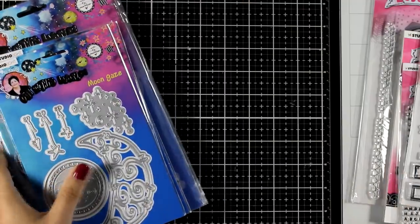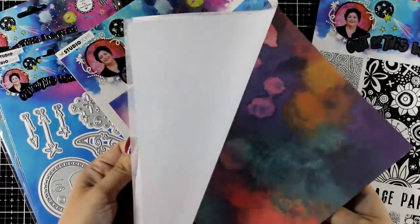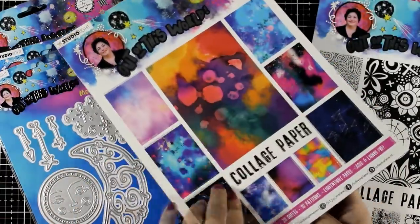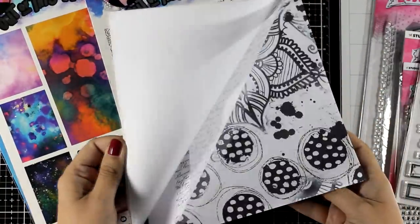So anyway, in this collection you will also find pattern paper, you will find collage paper and there is also a block of die cuts that we all love to use. There is a link down below if you want to check out the collection and choose your favorites.